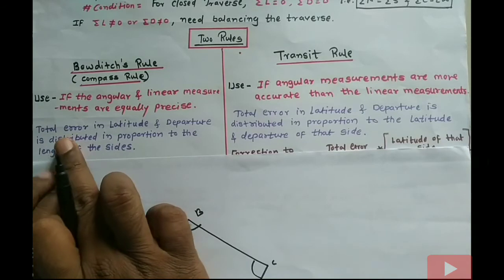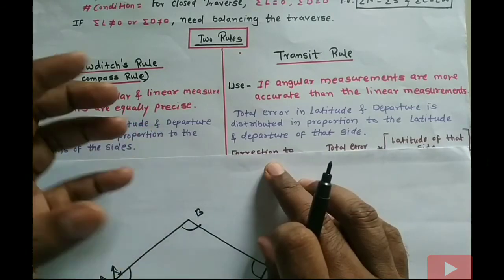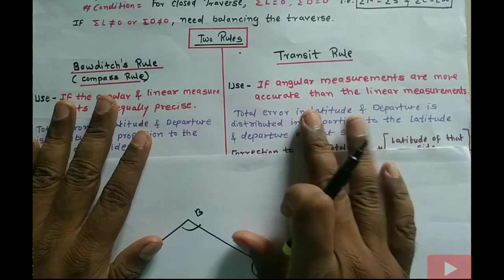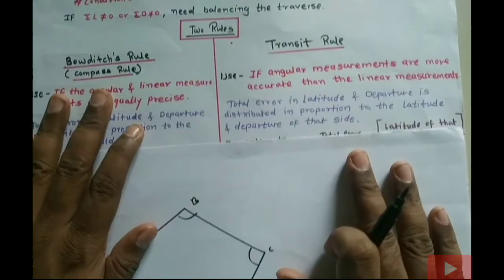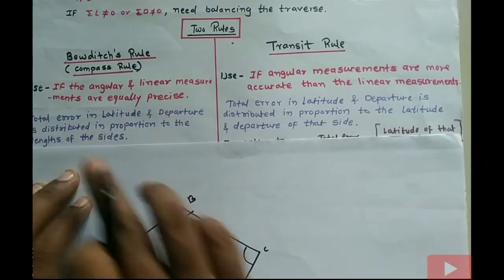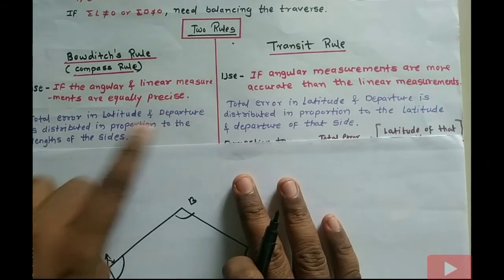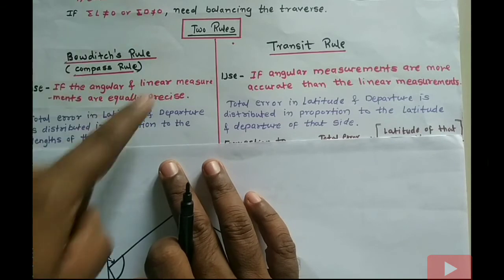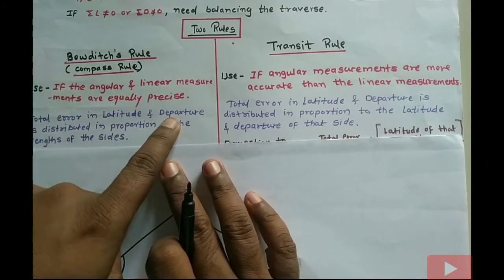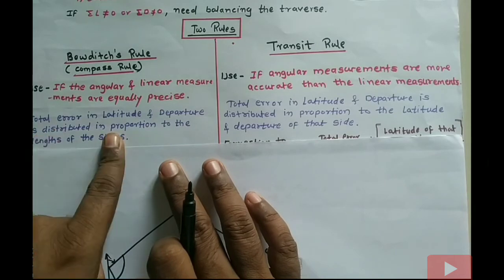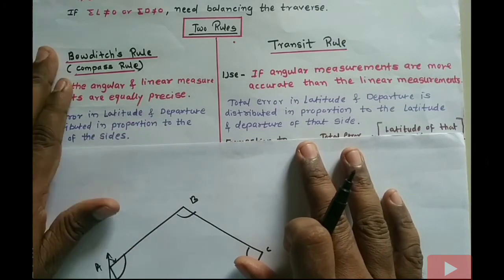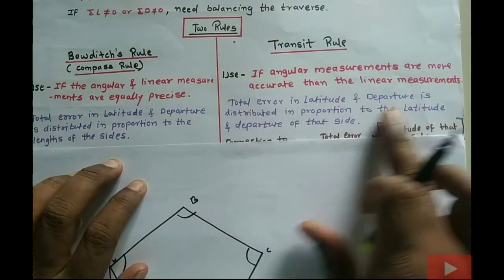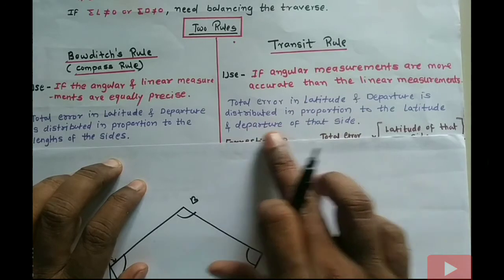For applying corrections in balancing the traverse, the important point is: in the Bowditch rule (compass rule), the total error in latitude and departure is distributed in proportion to the length of the sides. So for each side, the correction is proportional to its length relative to the perimeter. In the transit rule, the total error in latitude and departure is distributed in proportion to the latitude and departure of that side.